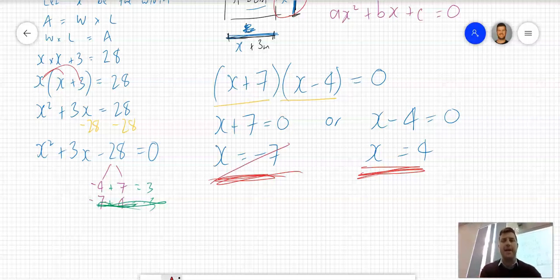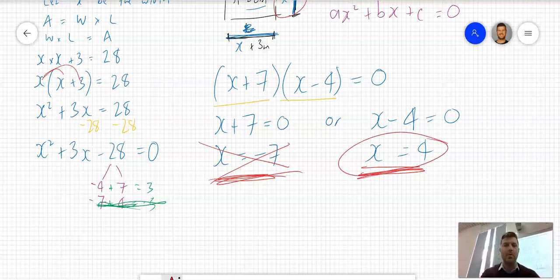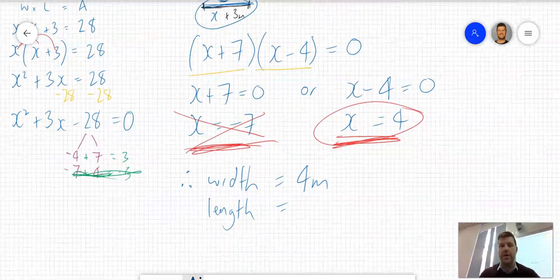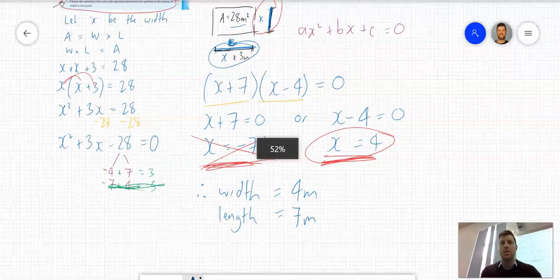We can't have a negative width. If I said the width of this table was -7, that would be crazy. So the answer is 4. Therefore, the width equals 4 meters, and the length equals 7 meters, because we said it was the width plus 3.